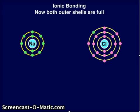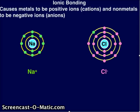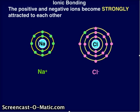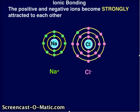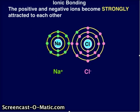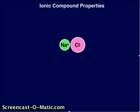Now both outer shells are full. This causes metals to be positive ions called cations, and non-metals to be negative ions called anions. The positive and negative ions become strongly attracted to each other, resulting in several properties.